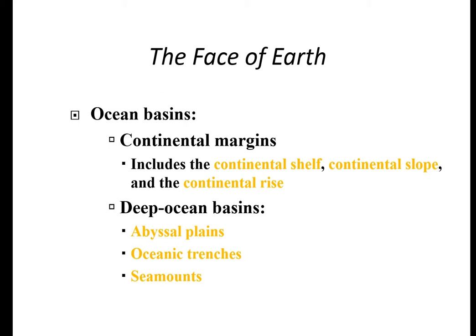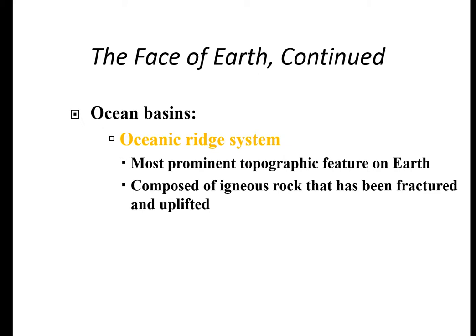The oceans have two main areas: the continental margins, which is the area as you slope off from the beach into the water, and deep ocean basins. On the west coast off of California, it's a very sharp shelf with a steep, deep slope. The deep ocean basins include abyssal plains, oceanic trenches like the Marianas Trench in the Pacific, and seamounts. The most prominent feature in the oceanic ridge system would be the ridges, like the mid-Atlantic ridge between North and South America and Europe and Africa — composed of igneous rock that has been fractured and uplifted.